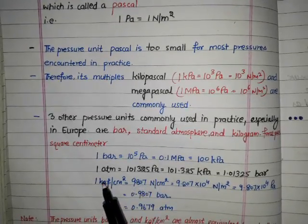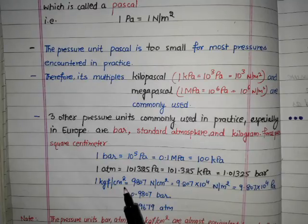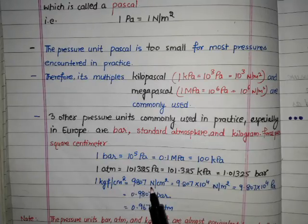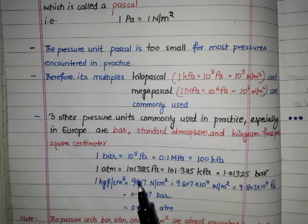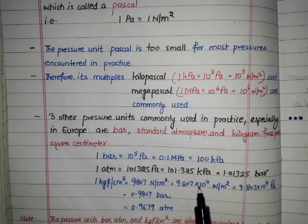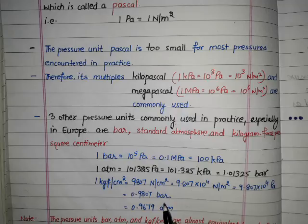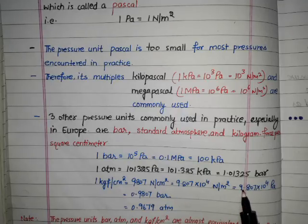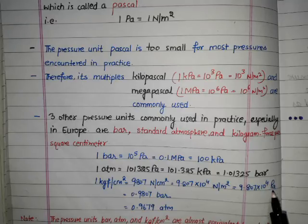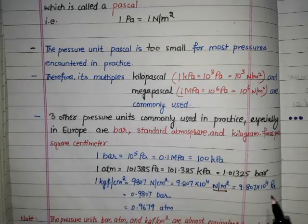One kgf per centimeter square equals 9.807 Newton per centimeter square, which equals 9.807 into 10 raised to power 4 Newton per square meter, and that equals 9.807 into 10 raised to power 4 Pascal.